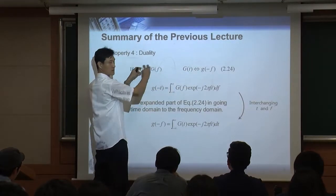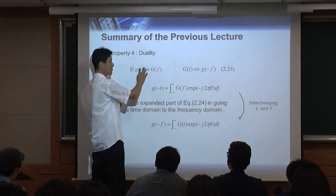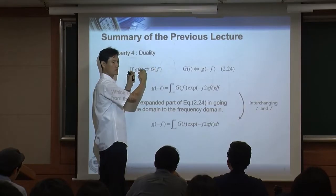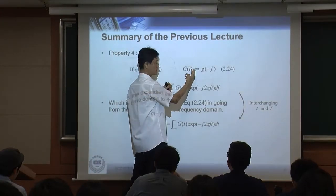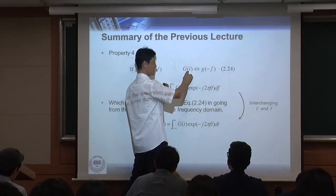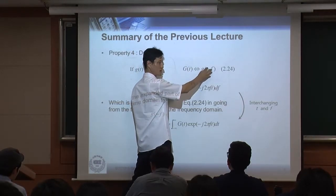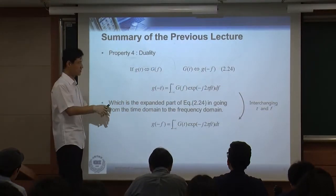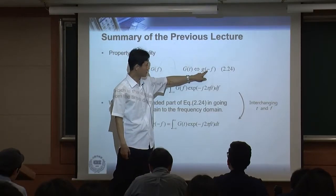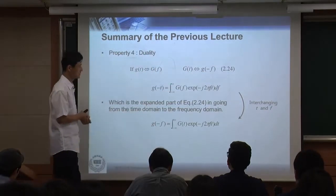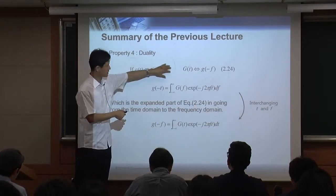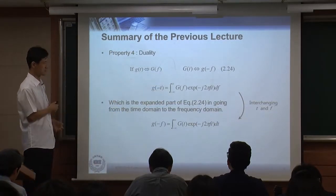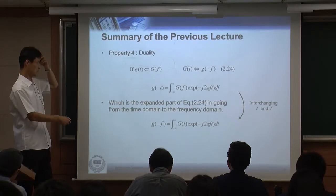Rectangular and sinc are always partners — they always come together. Even if you flip the domain, the time domain is sinc and the frequency domain is rectangular, because those two are a pair. Even though you switch, you get the same relationship — except that you have a minus sign. You can always put this into the original definition of the Fourier transform to verify this result.